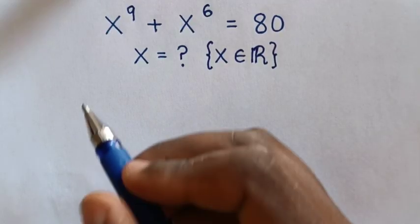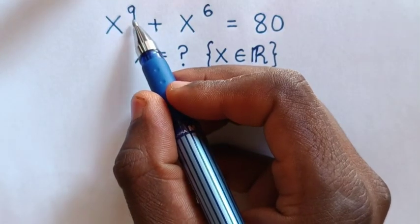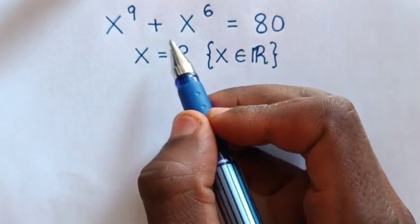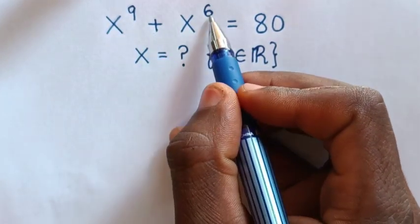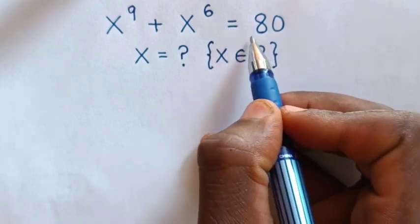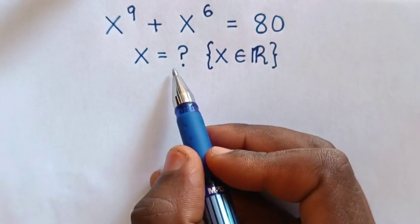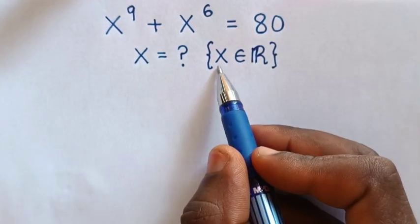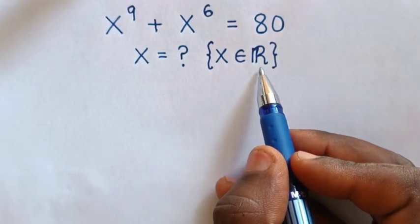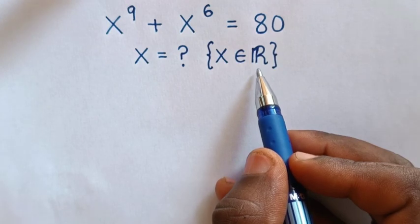Hello! How to solve x power 9 plus x power 6 is equal to 80. To find the value of x, such that x is an element of the real numbers.